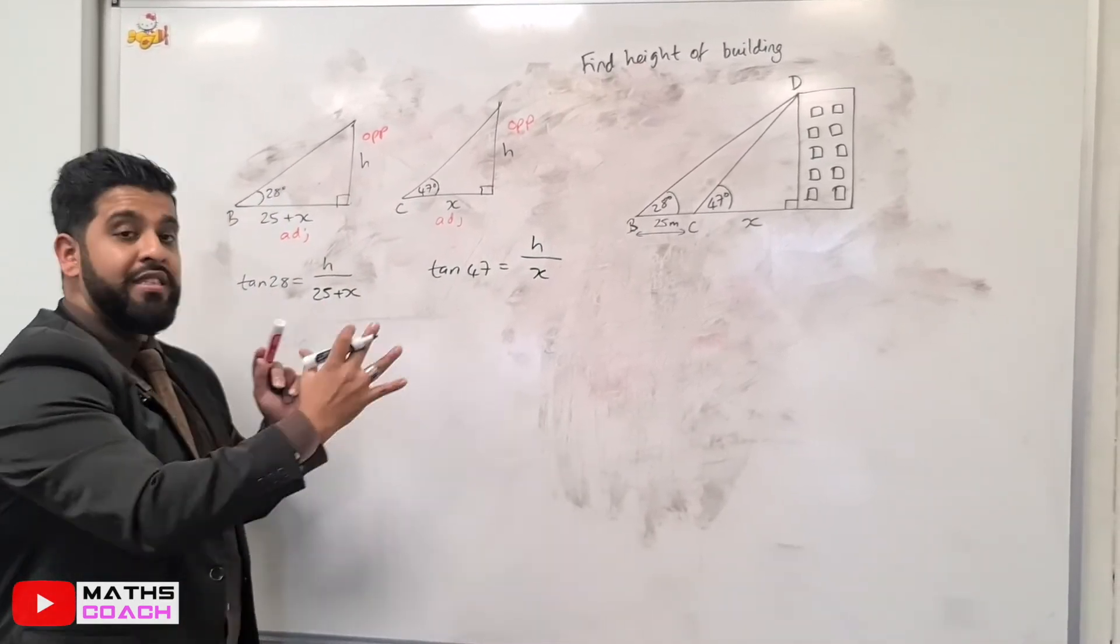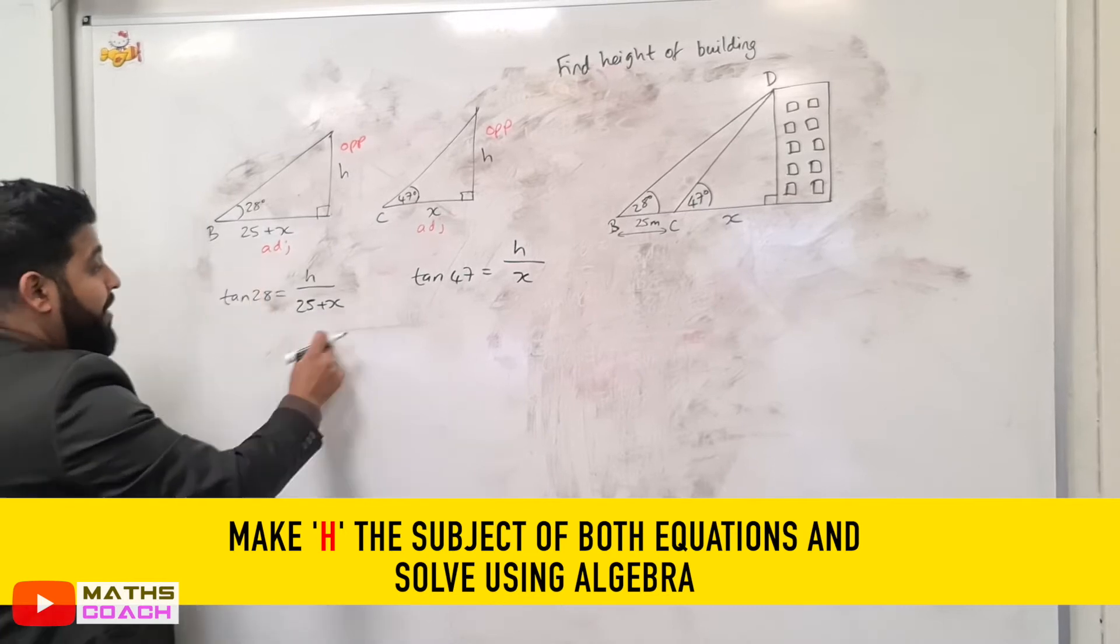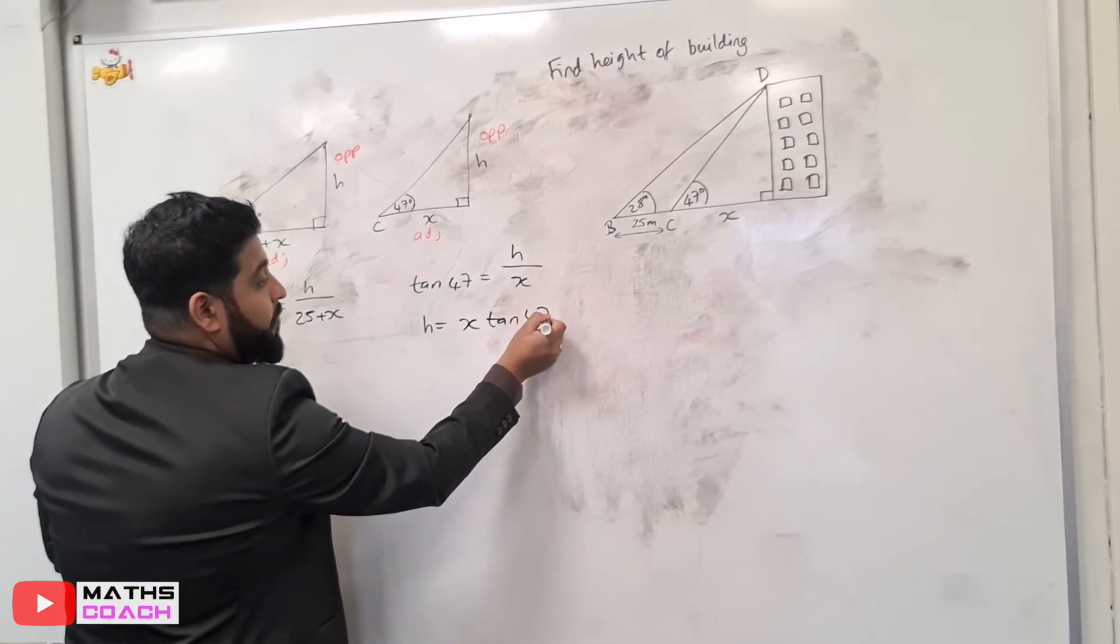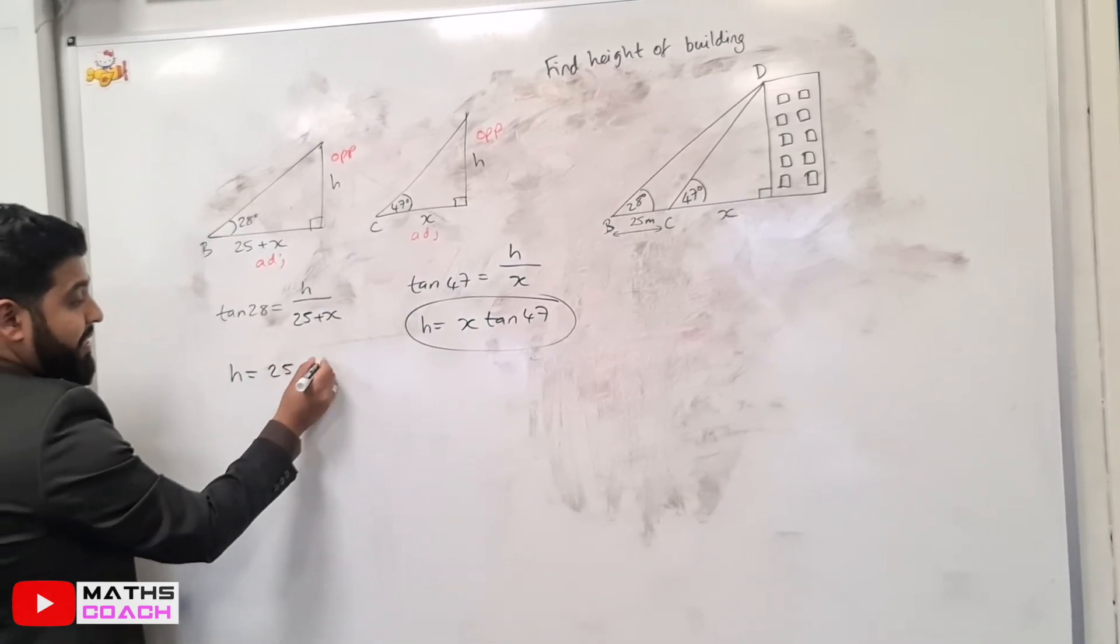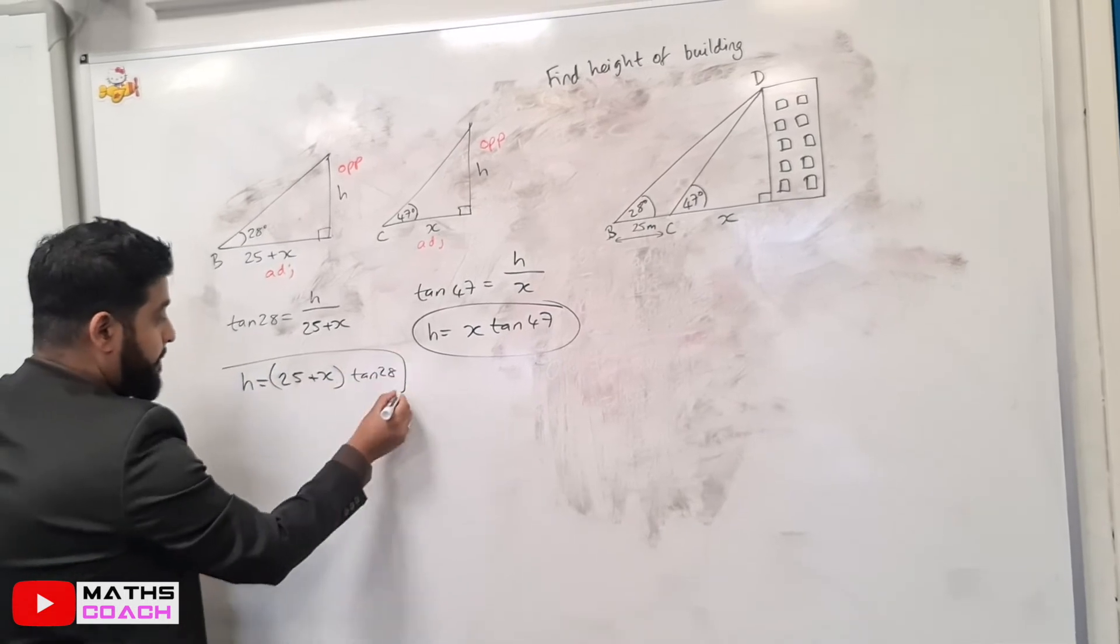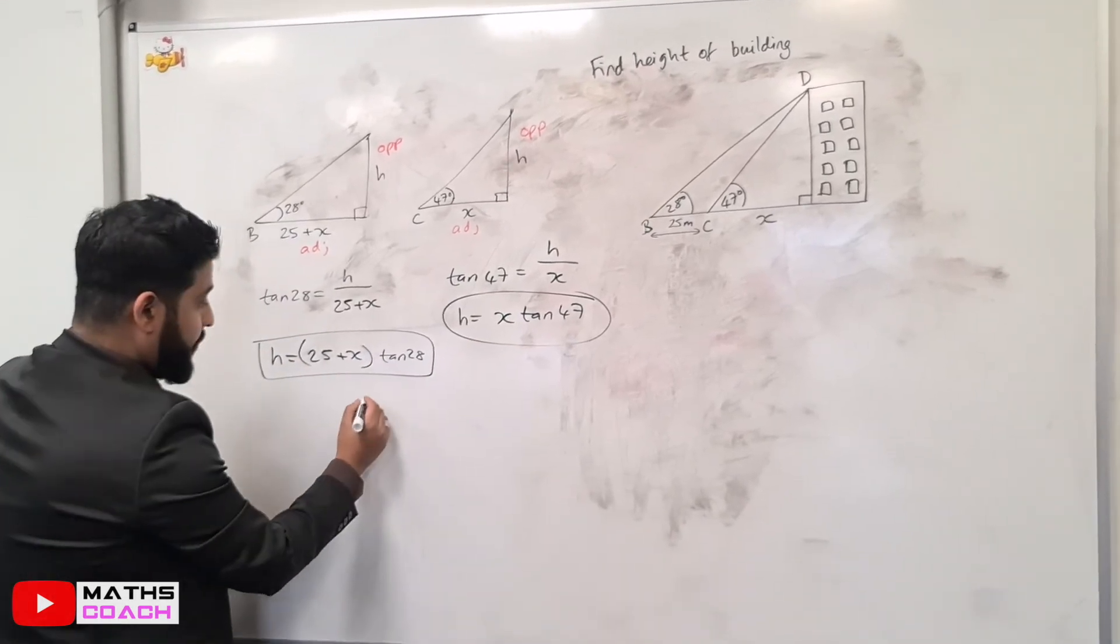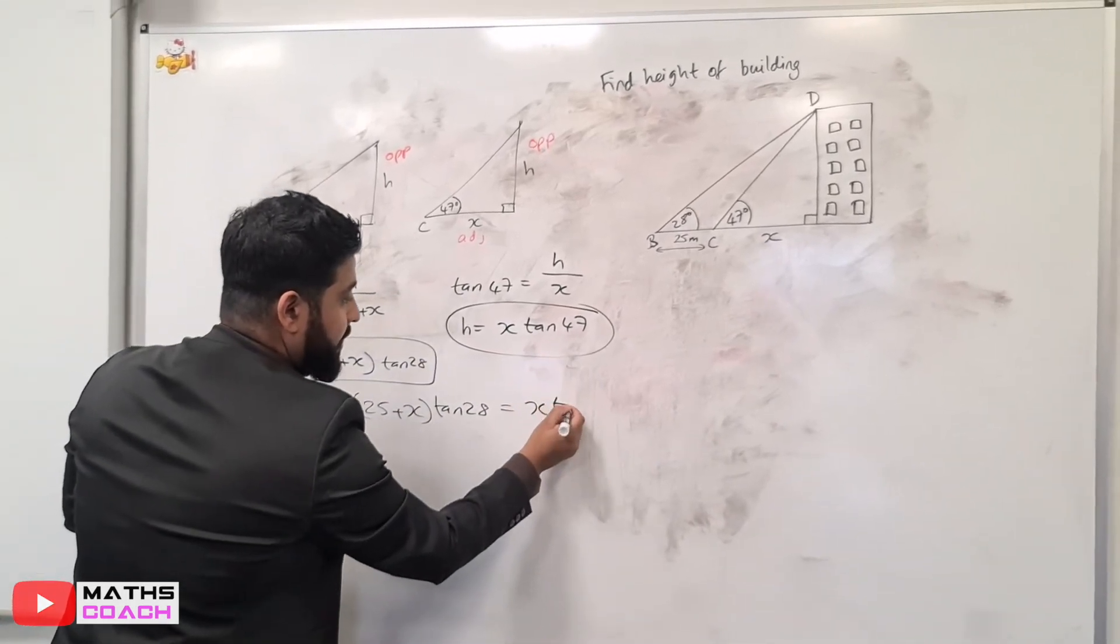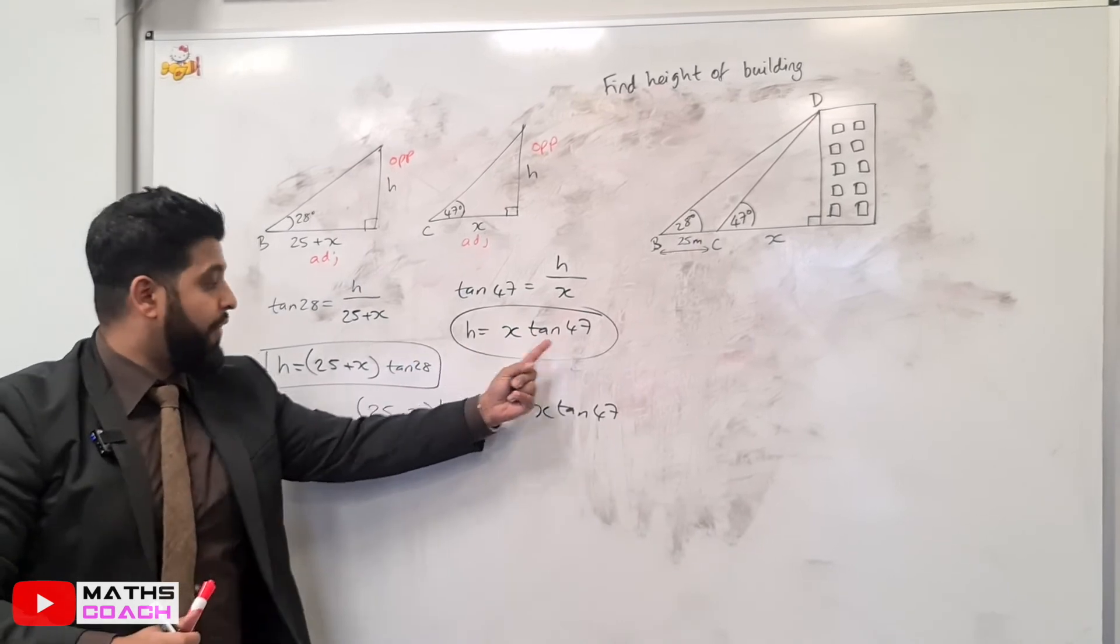Next, I will solve both of these simultaneously, because the H values are the same in both of them. I will rearrange this, and I will rearrange this. If I start with this one here, H will be equal to X times tan 47. And then on this one, I can do the same. H will be equal to 25 plus X, in a bracket, it's very important you remember to put this in a bracket, times by tan 28. I now have two equations for H, and I can equate them to each other. Therefore, 25 plus X, tan 28, is equal to X, tan 47. Once again, why can I do this? Because H equals that, H equals that, therefore, that equals that.